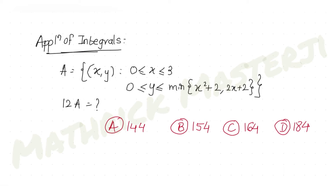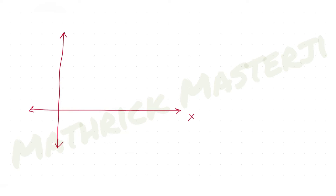We have been told the area consists of coordinates x and y where x is from 0 to 3. Setting up the coordinate axes with the y-axis and x-axis, x goes from 0 to 3, so we draw the line x equals 3 and the line x equals 0.